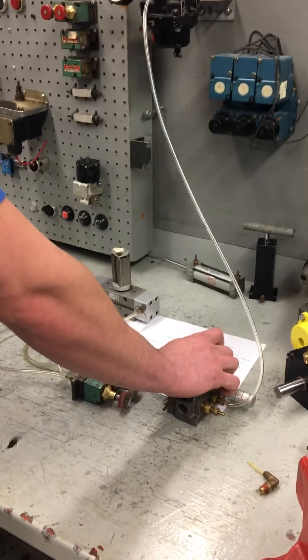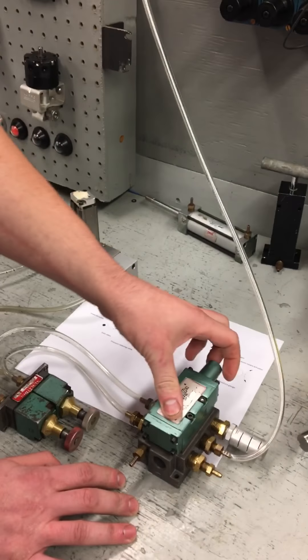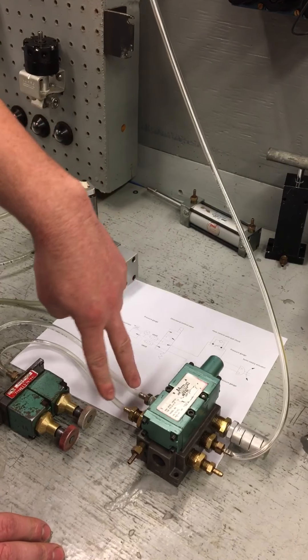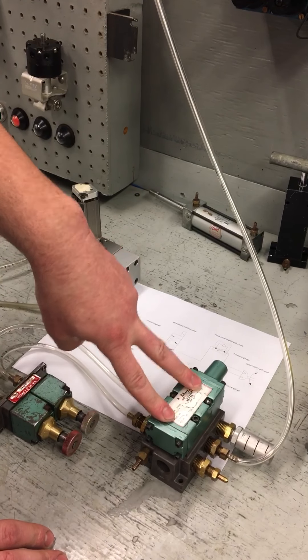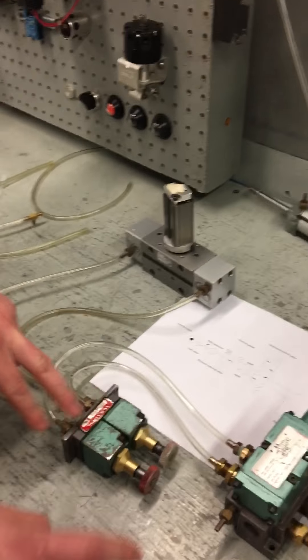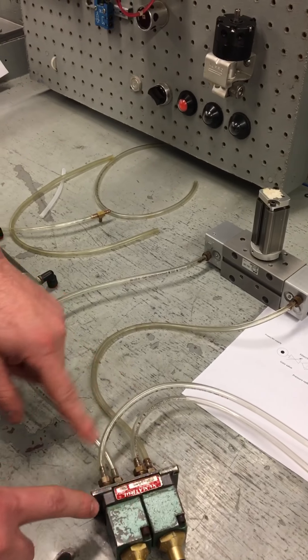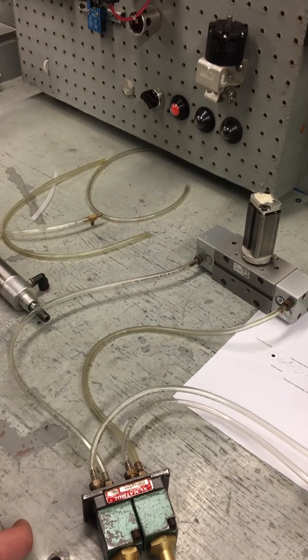It comes down here, feeds our valve. This is a directional control valve. You see the air comes in, there are mufflers on here, and then two lines coming out of the directional control valve feed our flow controls. Now it splits off, flow control for each circuit going into our actuator.